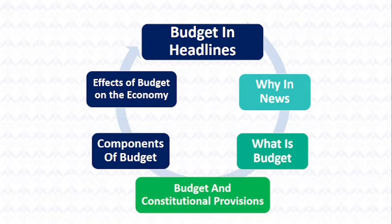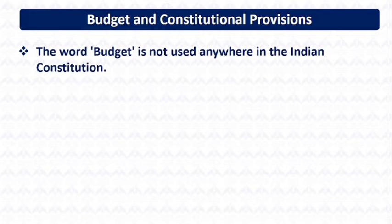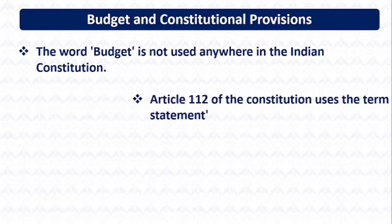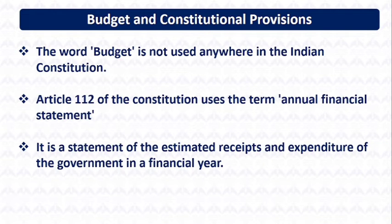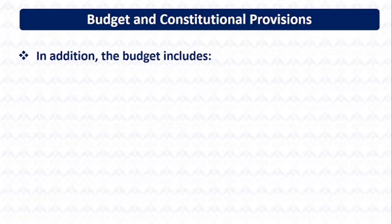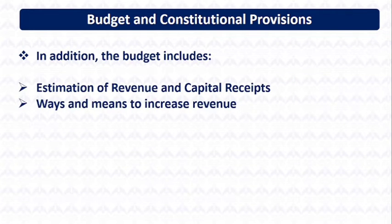Let's see what are the important constitutional provisions provided for the budget. The word 'budget' does not appear anywhere in the Indian Constitution, while Article 112 of the Constitution uses the term 'Annual Financial Statement.' It is a statement of estimated receipts and expenditure of the government in a fiscal year.